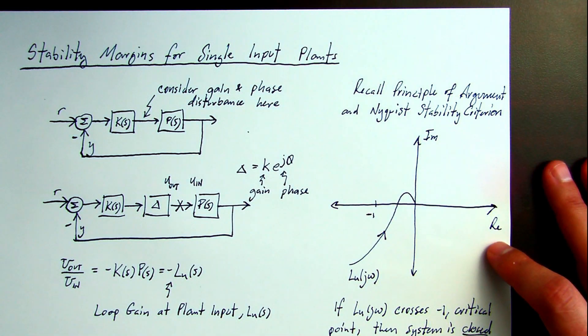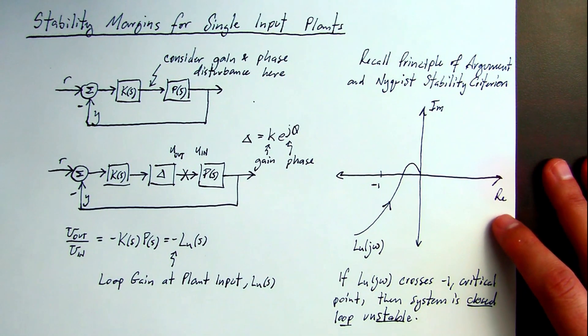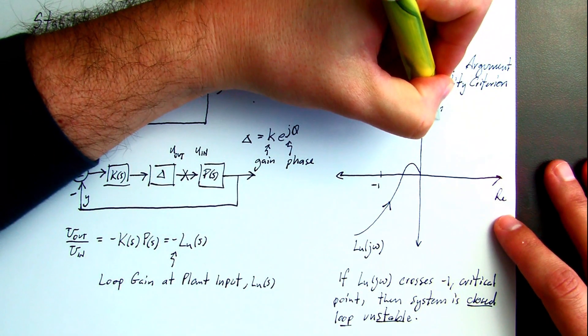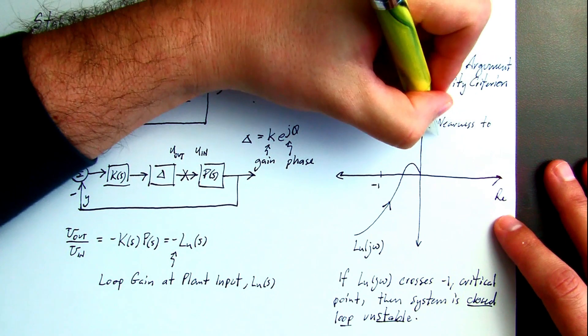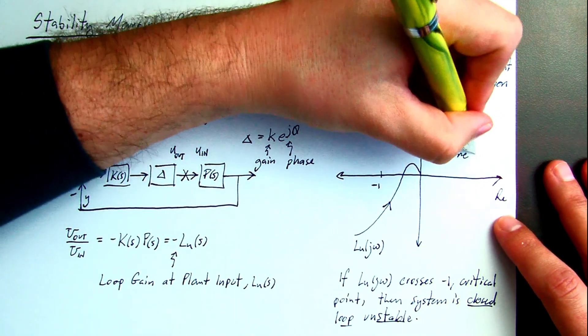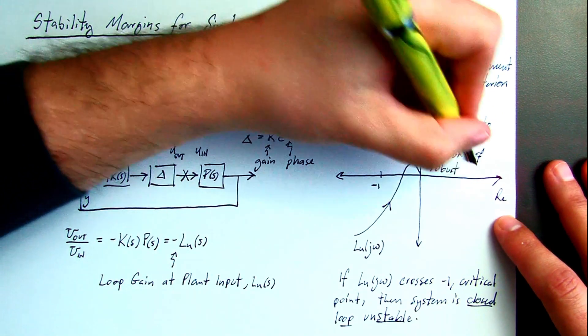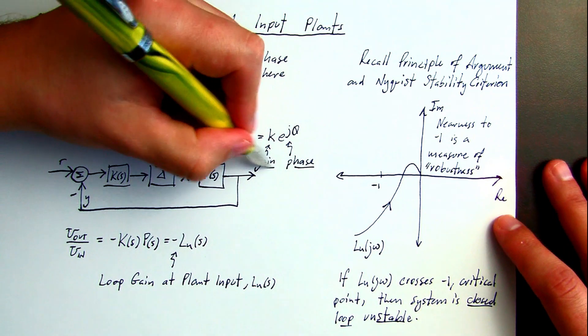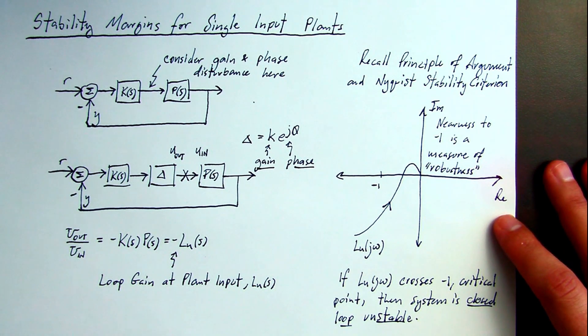When you get used to this, you can find that if LU crosses the critical point minus one, then the system is closed loop unstable. But Nyquist also shows us nearness to the critical point, and that leads to the measure of robustness in terms of gain and phase uncertainty captured in the delta block.